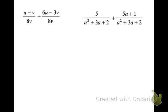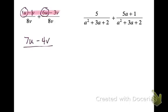Looking at our first problem, we have a common denominator of 8v and 8v, so we can combine the top. Combining like terms: 6u and 1u make 7u, and negative 1v and negative 3v make negative 4v. On the bottom, I just put 8v because that was my common denominator.